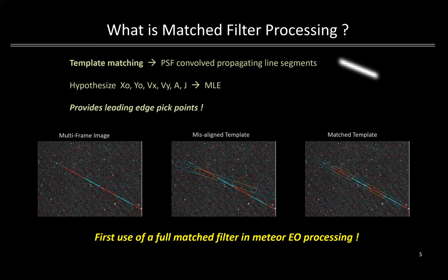If the template is misaligned with the actual imagery trace — as shown in the middle panel as an exaggerated misalignment — the MLE will be low. Adjusting the motion state vector coefficients using a particle swarm optimizer provides the best match, as shown in the right panel, with the highest MLE. A particularly notable point is that the template matching algorithm tends to focus on the break points between frames, or the leading edge gradients, and not on the loosely quantified centroid where there is very little intensity change along the middle of the streak. We found that the match filter provides high quality leading edge pick points when the PSF and the motion hypothesis are well matched to the image trace.